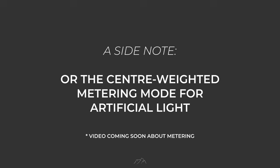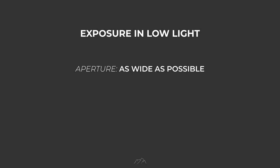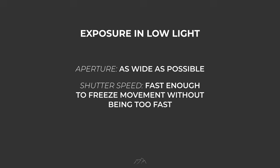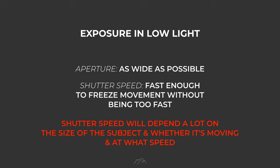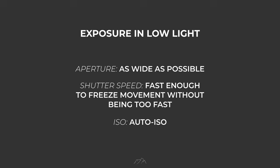To start with, I would immediately use the widest aperture possible on the lens to allow the most light to enter. Then find a shutter speed that will render the subject sharp without being unnecessarily fast. This will depend a lot on the size of the subject and whether it's moving and at what speed. To complete the exposure, we need to set the ISO speed. I suggest using auto-ISO here and letting the camera determine the best ISO setting required.